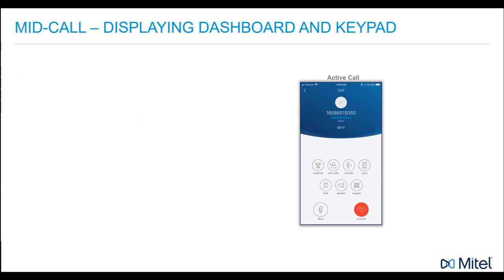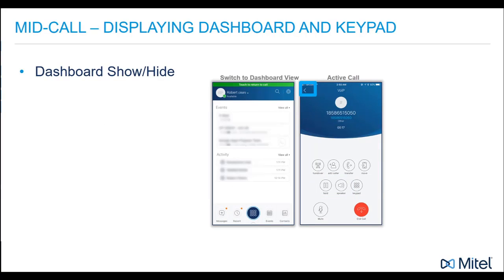When you're on a call, press the left arrow at the top of the screen to view the dashboard, and press the green bar at the top of the dashboard to return to the active call display.